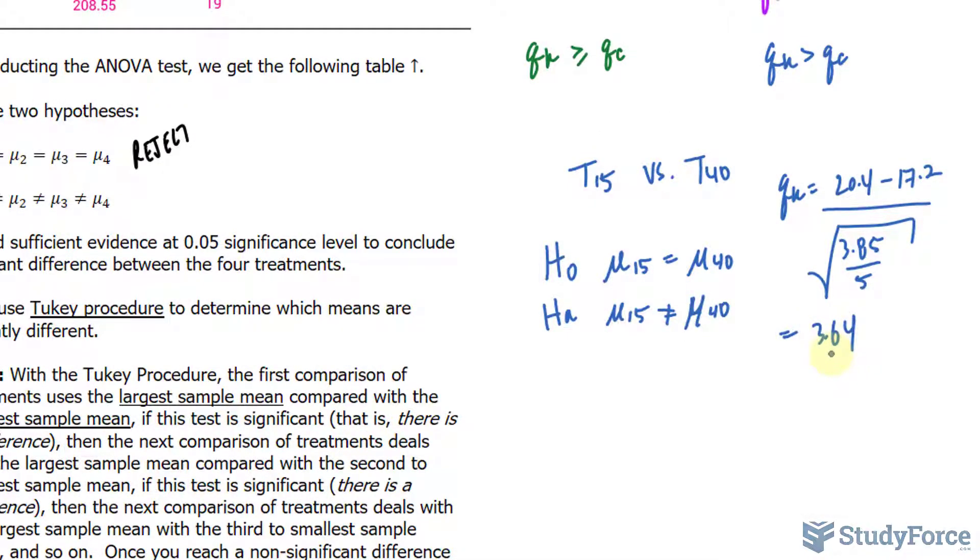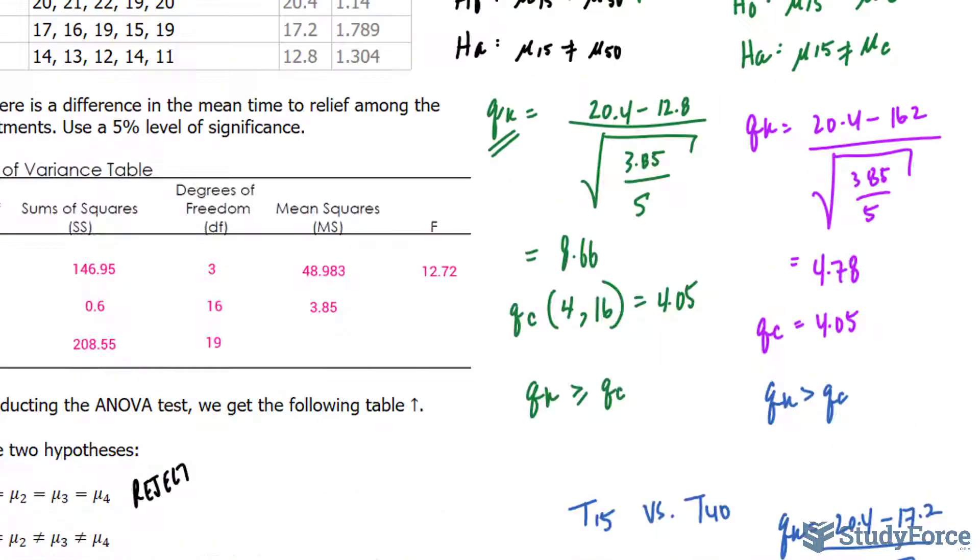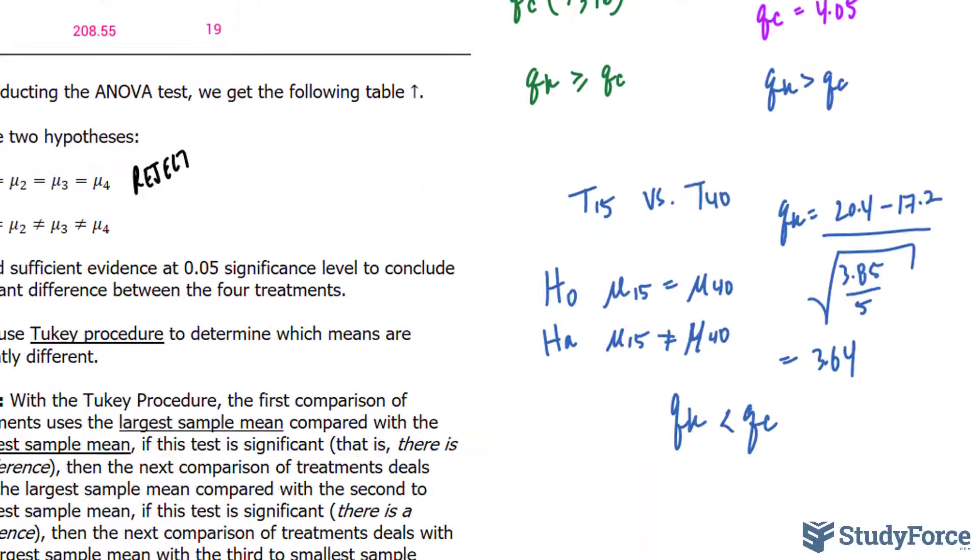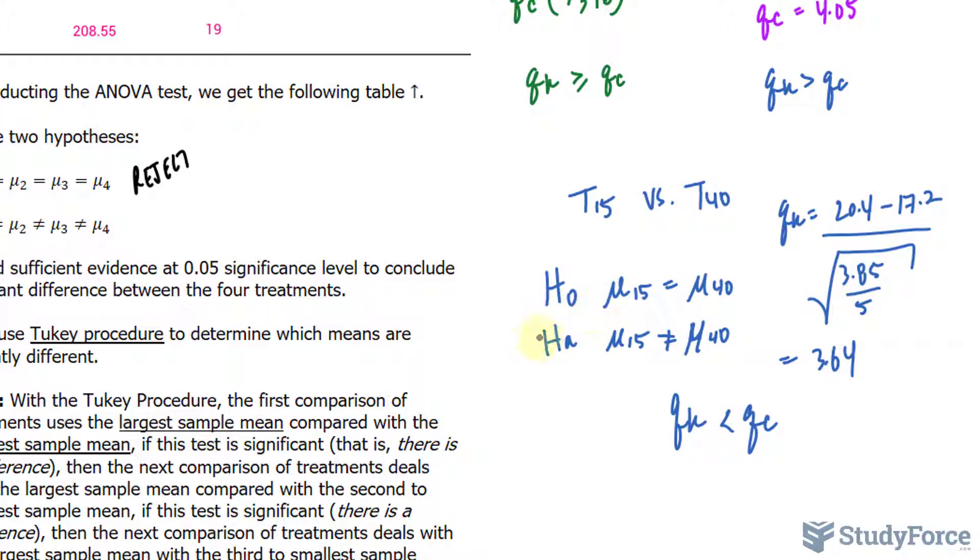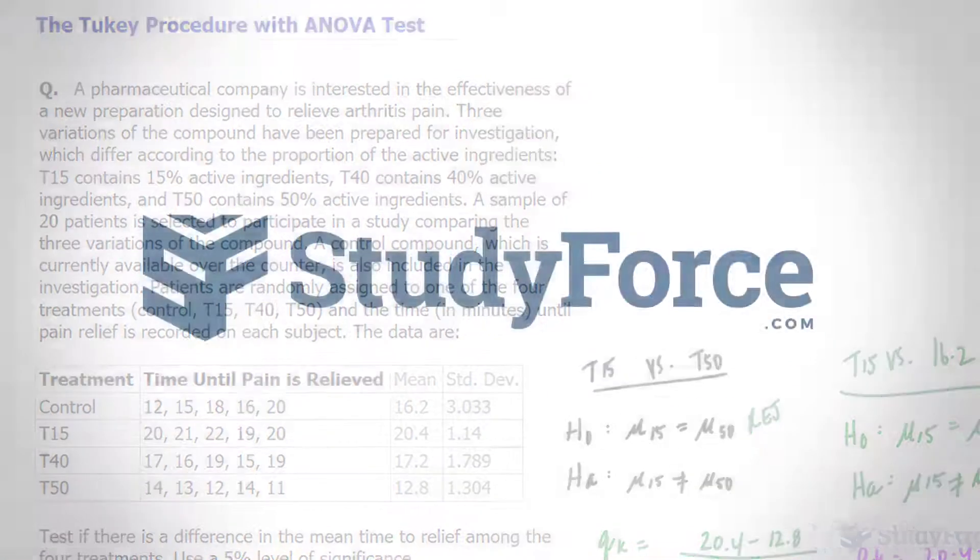Finally, Qₖ is smaller than Qc, which we found to be 4.05. We do not have enough evidence to reject the null in favor of the alternative. At this point, we stop this post-hoc procedure and conclude which groups are significantly different from one another. And there you have it, another example on the Tukey procedure following the ANOVA test.